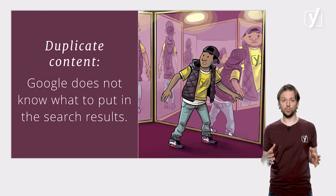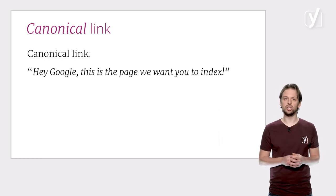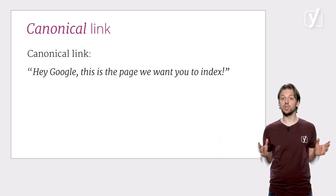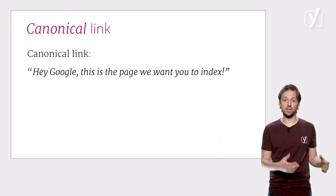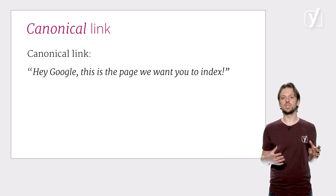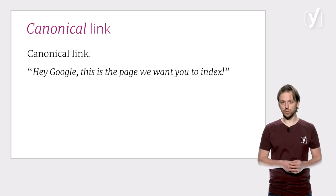Canonical solves the duplicate content problem. The canonical link tells Google which version of the page is the version it should include in the search results. This is really important because you don't want your own content to compete with itself and confuse Google. Therefore, it's best to tell Google which page you prefer, and we call this most important URL the canonical.